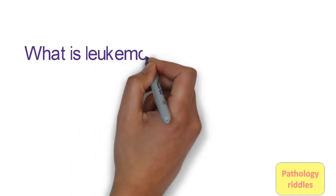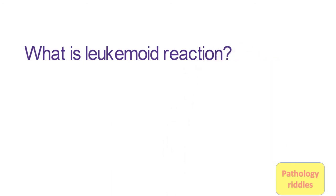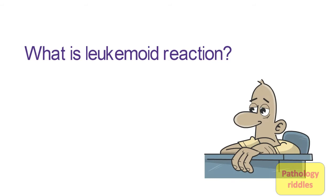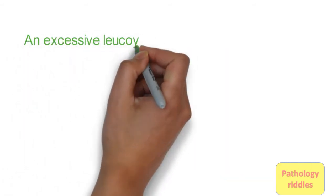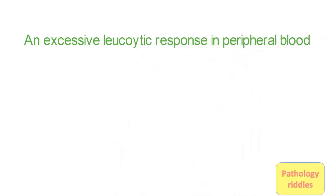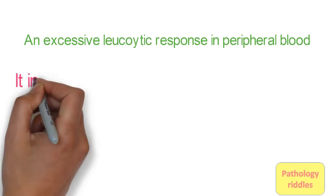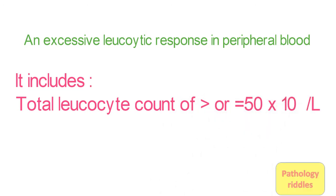So what do we deal with today? Leukemoid reaction. Do wait till the end of the video to get a useful tip. So what do we mean by leukemoid reaction? It is an excessive leukocytic response in peripheral blood. Excessive leukocytic response means the total leukocyte count will be greater or equal to 50 into 10 to the power 9 per liter. If you want it in microliters, it will be greater or equal to 50,000 cells per microliter.